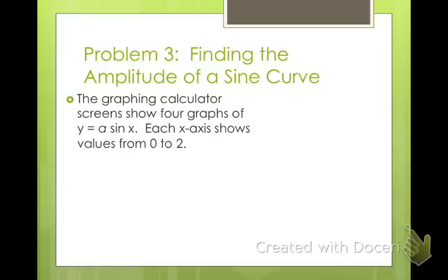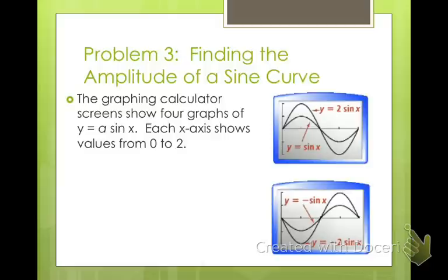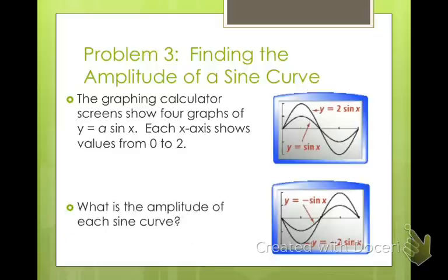The graphing calculator screen shows four graphs of y equals a sine x. And each x-axis shows values from 0 to 2. So here I have four different sine curves. So you can see the ones on the top are both positive values. So it starts at 0, 0, goes up first, and then goes down. The bottom two both have negative values, so they go down first and then up. But all four start at 0, 0. And you can see that the one with the 2 in front of it, the 2 sine x, has a much taller curve than just the sine of x.